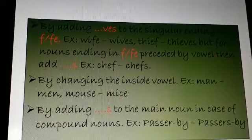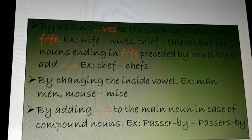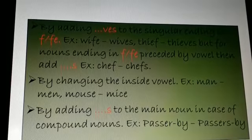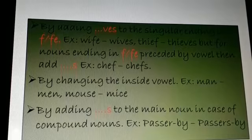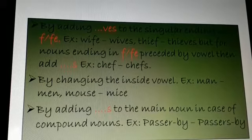The next one is by adding ves, v-e-s, to the singular ending in f or f-e. Example is wife. So you are going to add v-e-s. So it becomes wives. Thief, thieves.